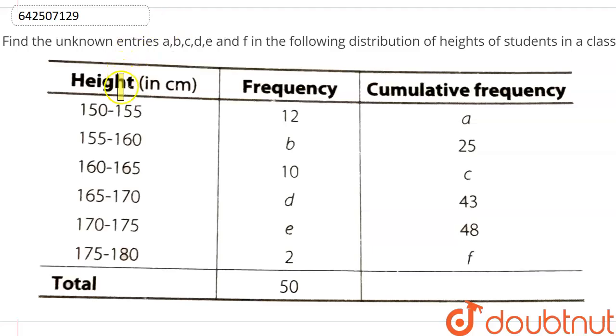Hey everyone, in this question we are given the height, frequency and the cumulative frequency of the data. And we have to find the unknown entries, that is A, B, C, D, E and F.